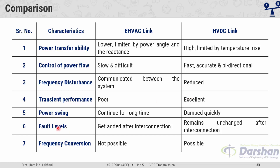Power oscillations continue for a longer time in AC systems, but are damped quickly in HVDC systems by control units. Regarding fault levels, in EHV AC links, fault levels get added after interconnection, but in HVDC links they remain unchanged. Frequency conversion is not possible in AC links, but in HVDC we can change the frequency.